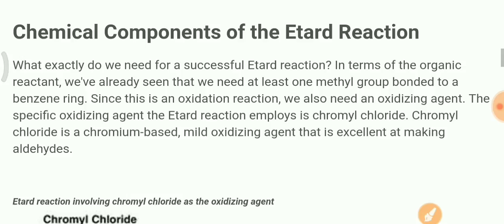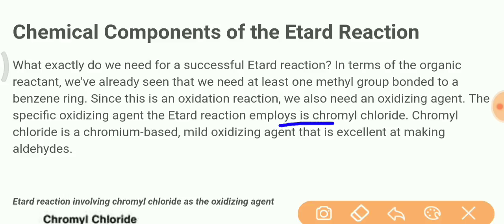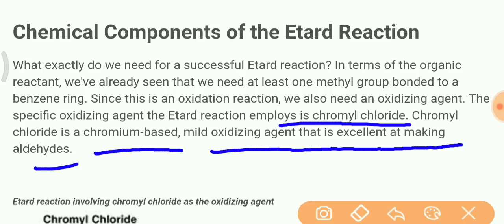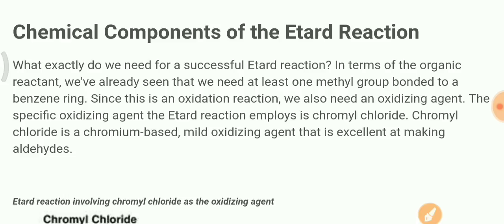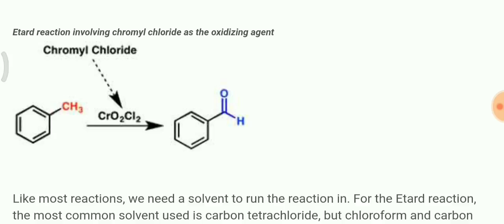Now let's discuss the oxidizing agent — which one can we use, which would be best for us? The oxidizing agent used in this reaction is chromyl chloride (CrO2Cl2). Chromyl chloride is a chromium-based mild oxidizing agent that is excellent for making aldehydes. Chromyl chloride is a mild — neither too strong nor too weak — oxidizing agent that we can easily use for making aldehydes. Because if over-oxidation occurs, your aldehyde can also convert into a carboxylic acid. So we need mild oxidation, and for that we use chromyl chloride.